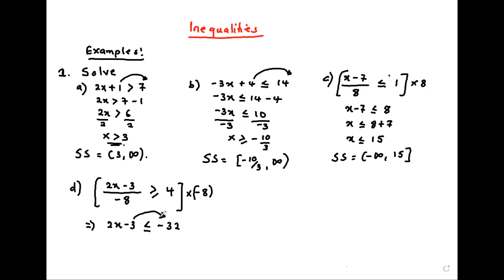A student who came in late asks about example C: because the 8 is in the denominator, we can multiply throughout by 8, so we remain with x minus 7 less than or equal to 8. The teacher confirms. The student then asks about example D — the teacher explains: the same thing, except that for D, the 8 in the denominator is negative, so it will affect the inequality as we multiply.